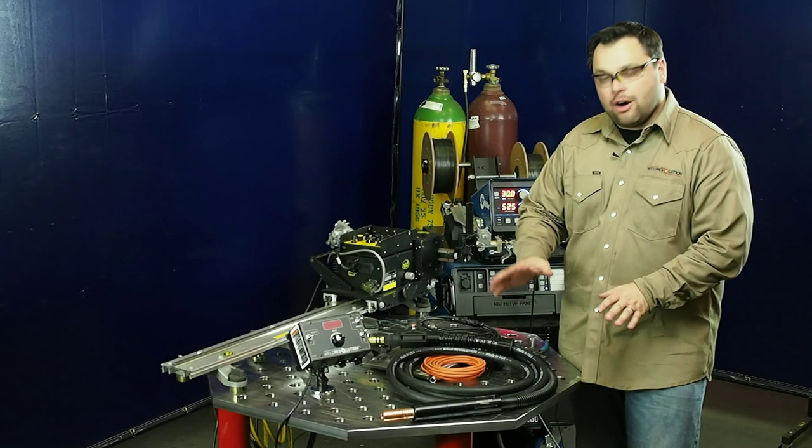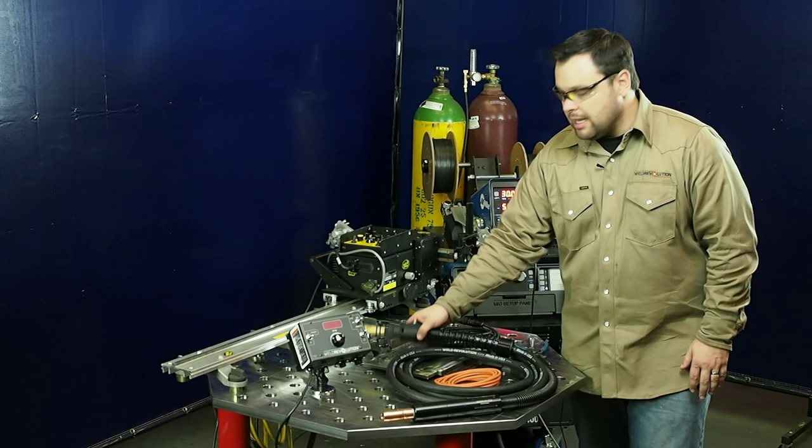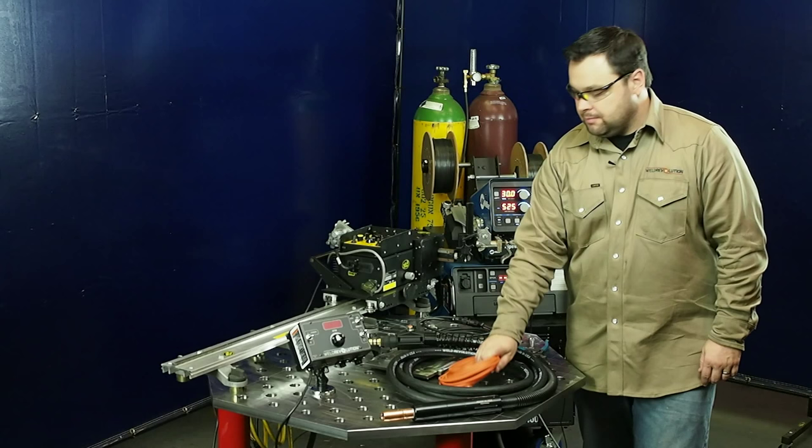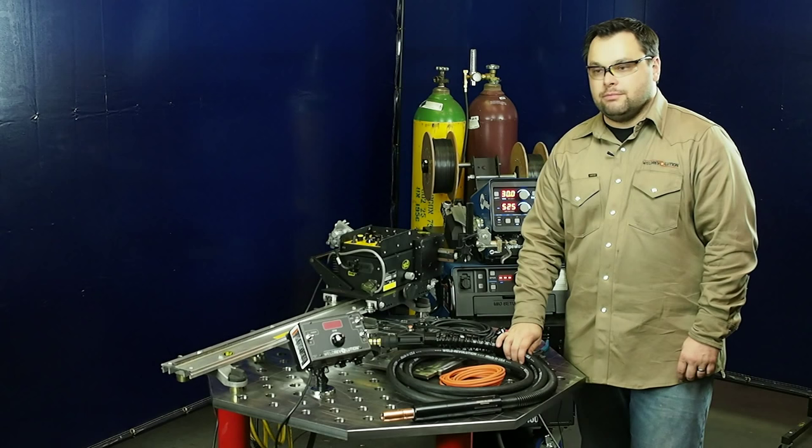Before I actually get into installing this new torch, I wanted to lay it out on a table for you so you can see how all the pieces go together. You can see the torch here with the main torch body, the cable and the end that plugs into your feeder, the control cable, trigger cable, and the control box itself.